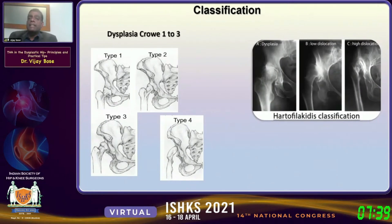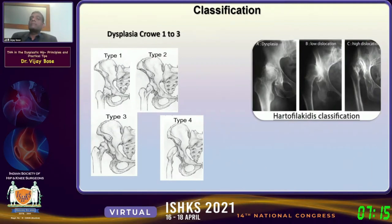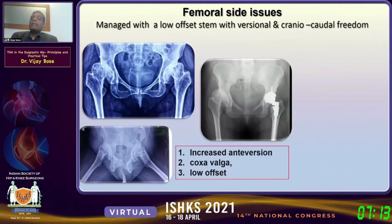We all know about the Crowe classification and the Hartofilakidis classification. One point juniors may not know is that Crowe is actually a fellow under Ranawath, so it's actually the Ranawath classification. We always put Crowe 1, 2, and 3 together because the principles of management are the same, whereas Crowe 4 has completely different principles and must never be confused with types 1, 2, and 3. The Hartofilakidis classification describes low and high dislocation.